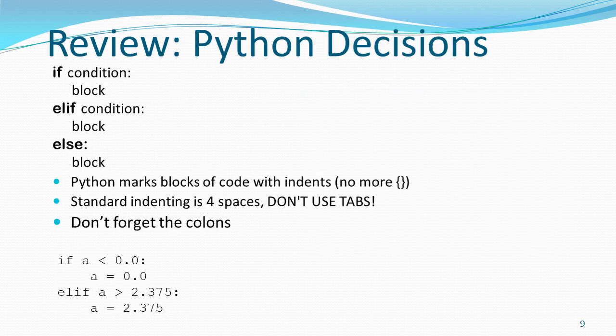A quick review of how you do decisions in Python: you say if, then some condition that has to be evaluated as true or false, followed by a colon. Then your block of code — remember in Python, blocks of code are indented four spaces. You may have an optional elif with another condition, and you can have as many of those as you want. Finally, your default would just be an else. Don't forget that colon — that's the number one error.